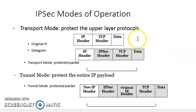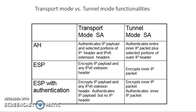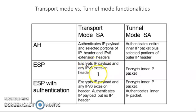Comparing transport mode versus tunnel mode functionality: for the authentication header in transport mode, it authenticates the IP payload and selected portions of the IP header — only the selected portion is protected. For IPv6, extension headers are also included. In tunnel mode, AH authenticates the entire inner IP packet plus the selected portions of the outer IP header.